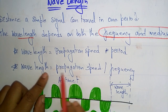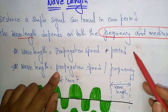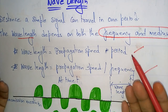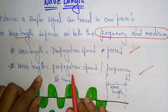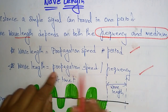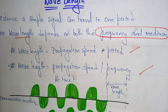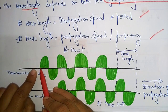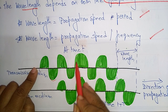Alternatively, wavelength is equal to propagation speed divided by frequency. So if you know the speed and the period, use the first formula; if you know the propagation speed and the frequency, use the second formula to calculate the wavelength. Over the transmission media, data is transmitted in the form of waves.